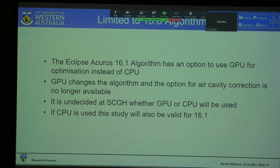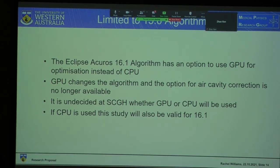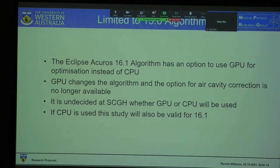Question: Thinking ahead to your results — if Eclipse underestimates by 1%, would that be of concern? What about 5%? What percentage impact would be clinically significant? Response: I think the standards set by AAPM are within 3%. I'm not sure if we aim to be more accurate than that at Charlie's or not.